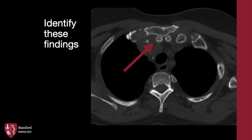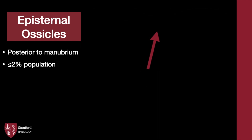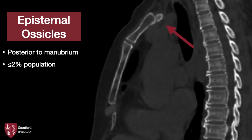Next case: what are these findings? These are episternal ossicles located posterior to the superior border of the manubrium. Like any ossicle in the body, do not mistake these for acute trauma. Here is how they look on sagittal view.